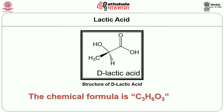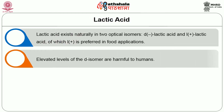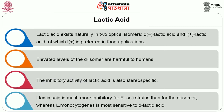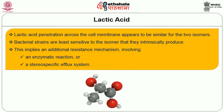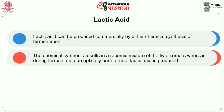Lactic acid exists naturally in two optical isomers — D-lactic acid and L-lactic acid — of which L- is preferred in food applications. Elevated levels of the D-isomer are harmful to humans. The inhibitory activity of lactic acid is also stereospecific. L-lactic acid is much more inhibitory for E. coli strains than the D-isomer, whereas L. monocytogenes is most sensitive to D-lactic acid. Lactic acid can be produced commercially by either chemical synthesis or fermentation. Chemical synthesis results in a racemic mixture of the two isomers, whereas during fermentation an optically pure form of lactic acid is produced.